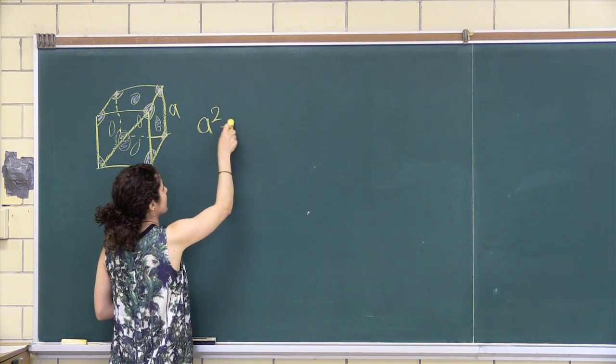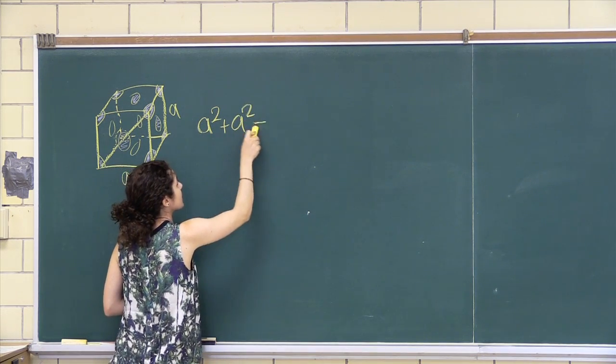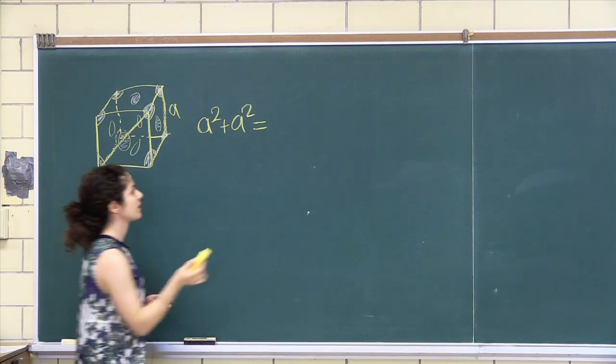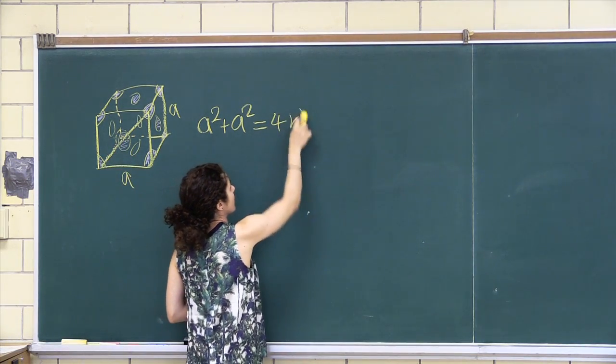So you can say that if we use our Pythagorean theorem, we have A squared plus A squared is equal to 1, 2, 3, 4 R squared.